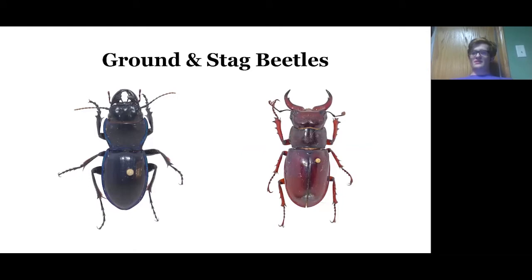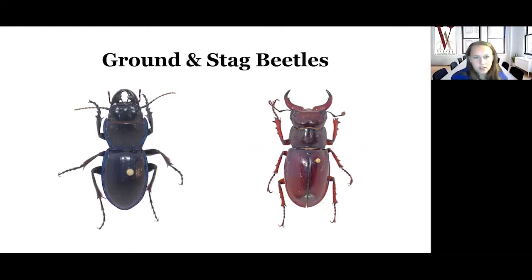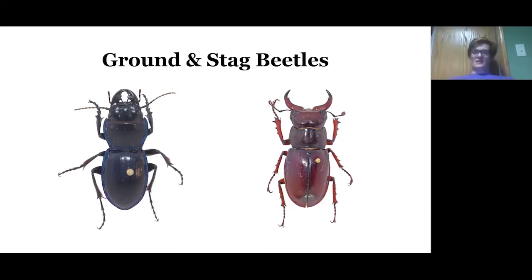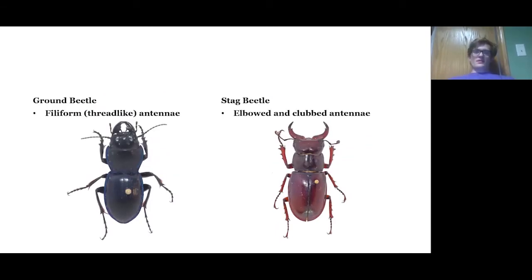The right is the stag beetle and the left is the ground beetle. The easiest way to tell ground beetles and stag beetles apart is actually by the antennae. Ground beetles will have filiform, or thread-like, antennae. Stag beetles will have elbowed and clubbed antennae. They're generally found in about the same habitats — you can find both of them around and under logs.